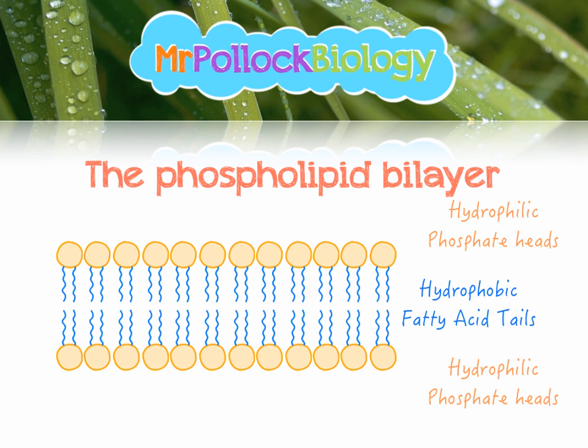The fatty acid tails, however, are hydrophobic — they want to be as far away from water as possible. What we see is that if we dump a load of phospholipids into water, they form this bilayer structure, this two-layered structure, where the hydrophilic phosphate heads are in contact with water and the hydrophobic fatty acid tails are protected from the water.